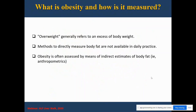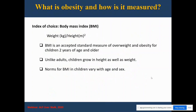So what is obesity and how is it measured? Overweight and obesity generally refer to an excess of body weight. Methods to directly measure body fat are not easily available in practice, and obesity is thus often assessed by means of indirect estimates of body fat from anthropometrics. The index of choice continues to remain body mass index, which is the accepted standard measure for overweight and obesity for children two years of age and older.